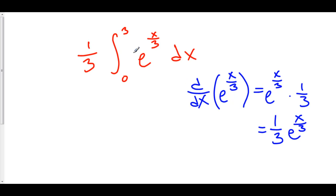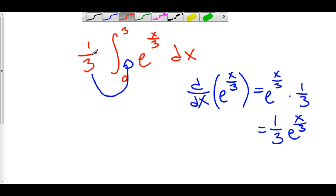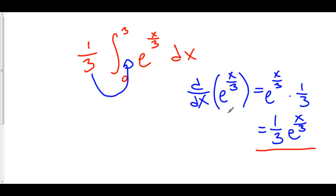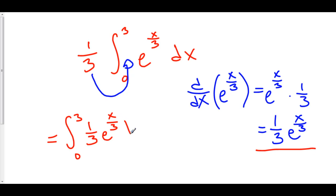Do I have a one third e to the x? Yes. Take a look at this one third in front. The constant rule allows you to take a constant out of the integrand, but it also allows you to put a constant inside of the integrand if it's being multiplied. So we actually have a one third e to the x over three. We found our antiderivative. I'm going to rewrite this integral as the integral from zero to three of one third e to the x over three dx.